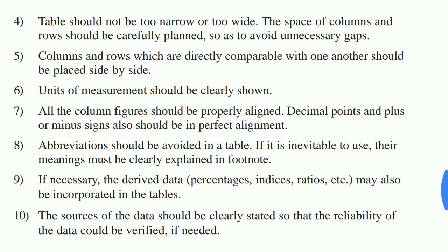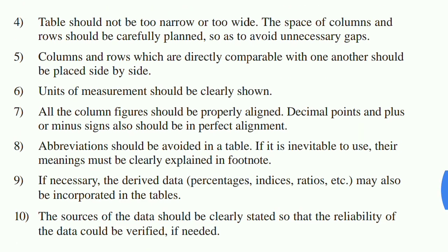The eighth point is that abbreviations should be avoided in the table. For example, instead of writing B.O.I. for Bank of India, you should write the full name, because many people will not understand the abbreviation. If it is inevitable to use abbreviations, their meanings must be clearly explained in a footnote at the bottom of the page. For instance, if you use NB or other short forms, the footnote should explain what they mean.